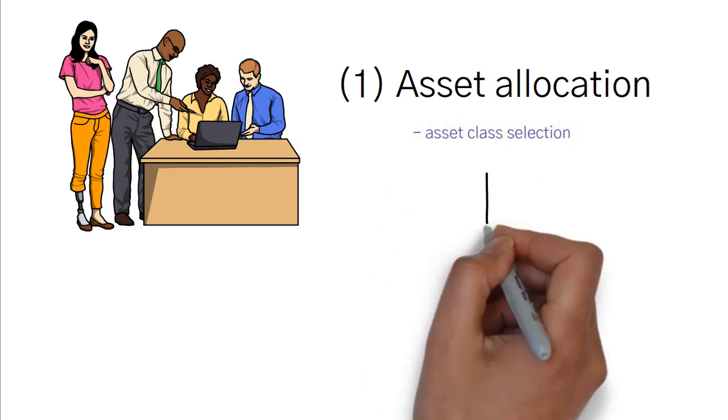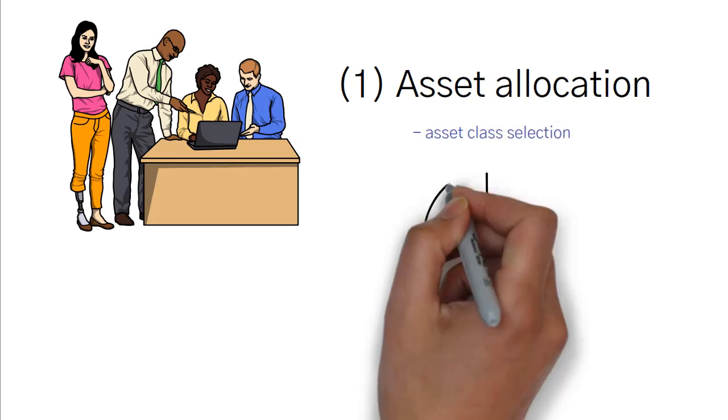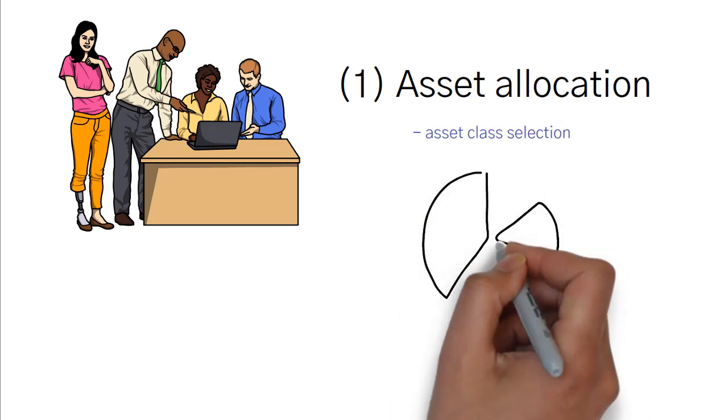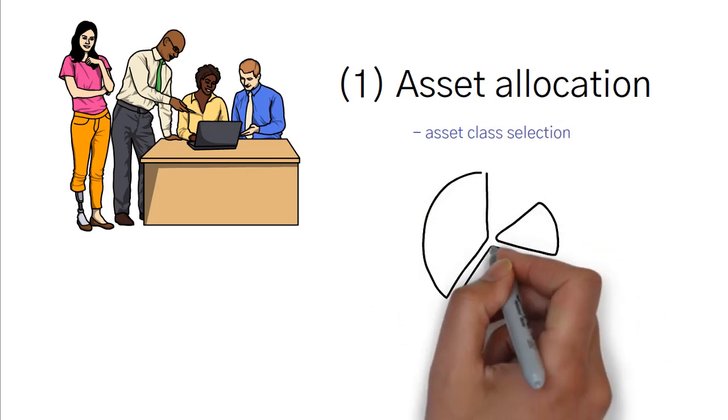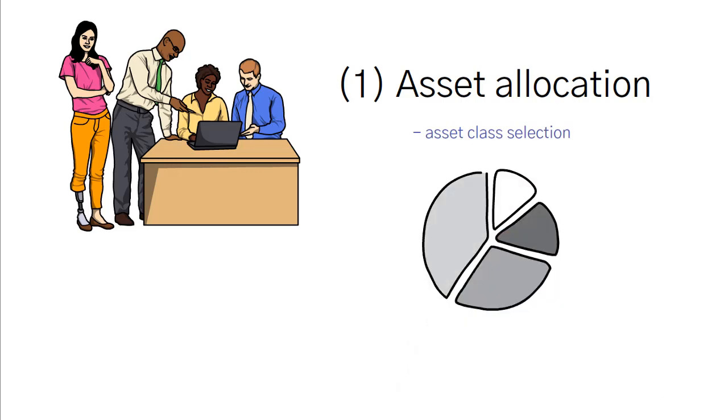Investors can create different portfolios by changing the percentage of funds in different asset classes. For example, you may want to invest 60% of your money in equity, 30% in bonds, and 10% in treasury bills.